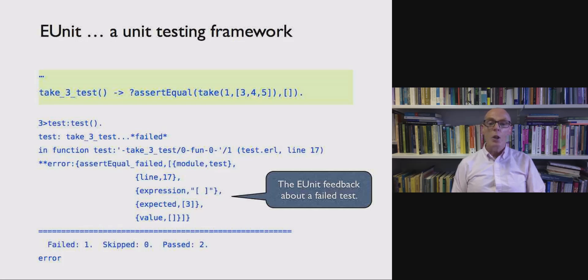If on the other hand we said that we expect to take one of three, four, five to be the empty list, we'd get a failure report. We would get a report that we'd looked for the empty list whereas the value we received was the list with just three in it. So you can see the report tells us one test failed and two tests passed. So it bundles up, it automates some of the more boilerplate-y things to do with testing.